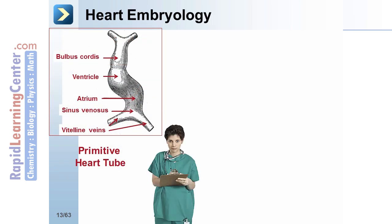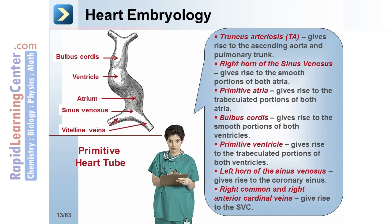The following embryonic structures give rise to specific components of the heart and great vessels. The truncus arteriosus gives rise to the ascending aorta and pulmonary trunk. The right horn of the sinus venosus gives rise to the smooth portions of both atria. The primitive atria gives rise to the trabeculated portions of both atria. The bulbous cordis gives rise to the smooth portions of both ventricles, while the primitive ventricle gives rise to the trabeculated portions of both ventricles. The left horn of the sinus venosus gives rise to the coronary sinus, and the right common and right anterior cardinal veins give rise to the superior vena cava.